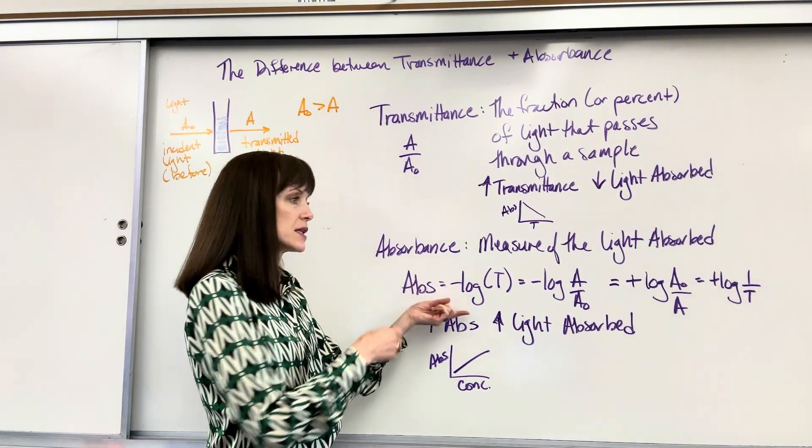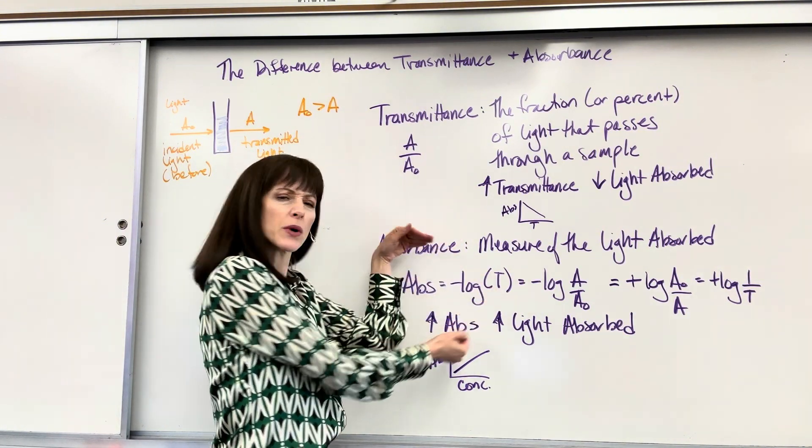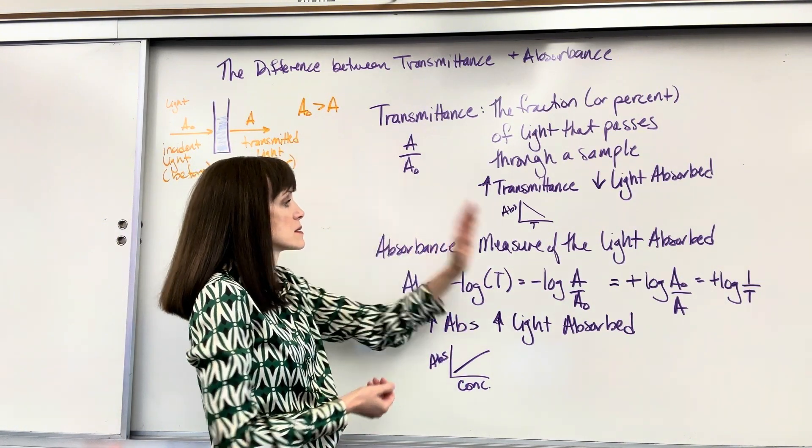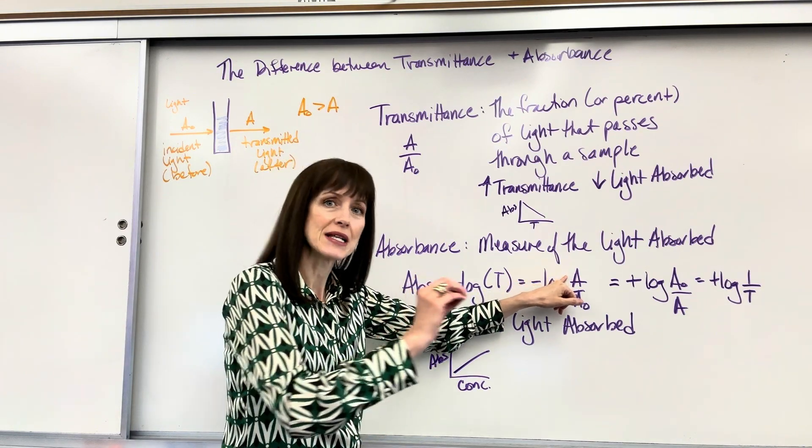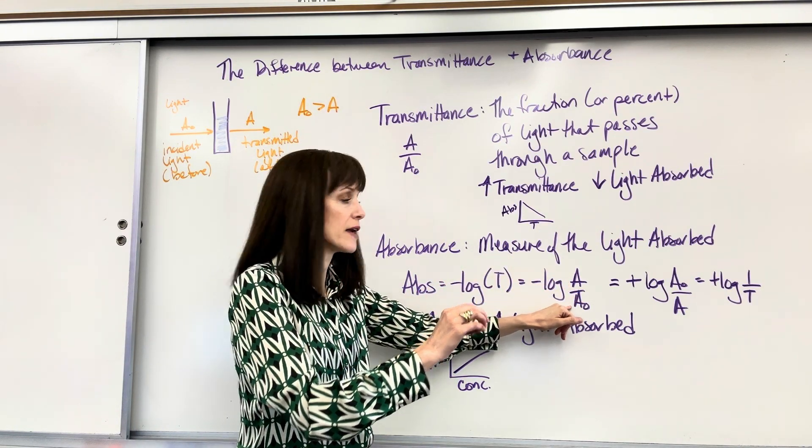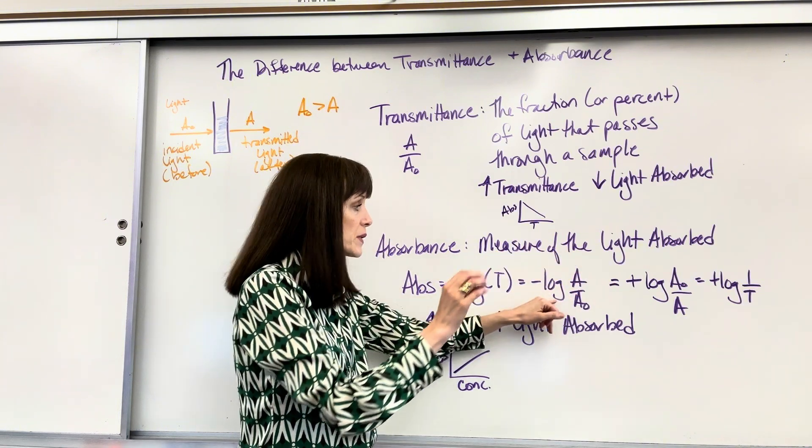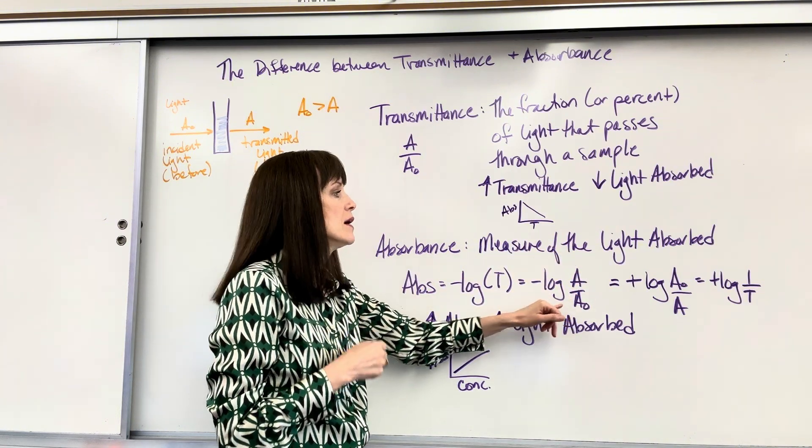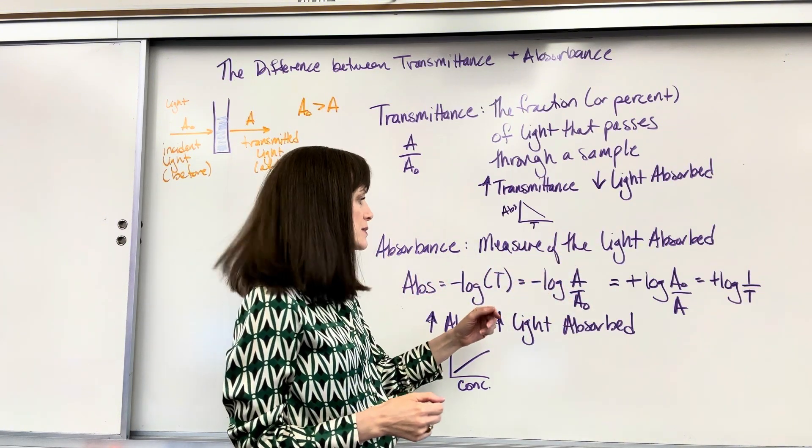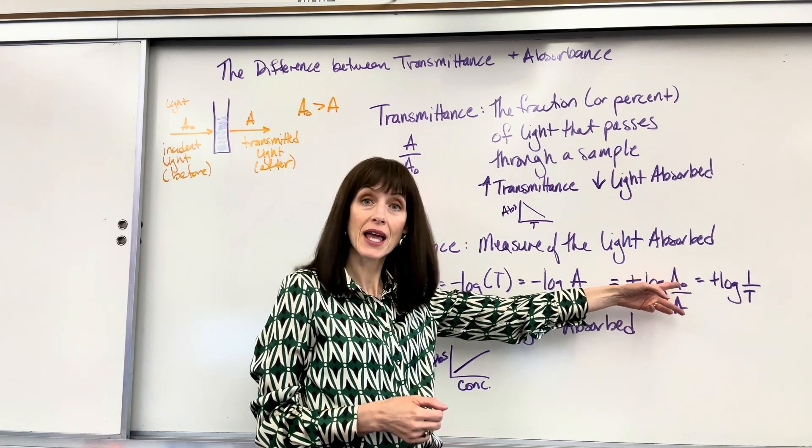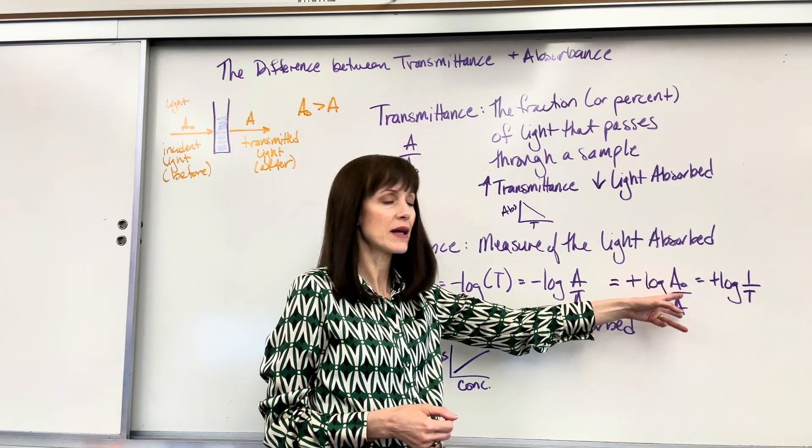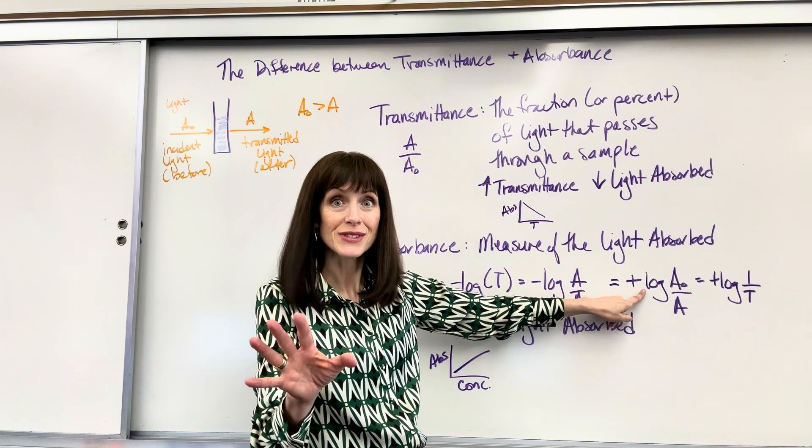So absorbance is the negative log of transmittance. I just broke apart transmittance. I took this, put it here. So the negative log of the transmitted light divided by the incident light, amount of light that comes out compared to the amount of light that we put in. Now, you guys know with logs, if I change this from a negative to a positive, that reciprocates what I have inside of my log. And sometimes you'll see this in books.